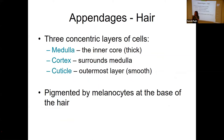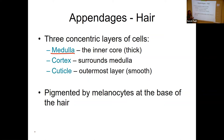Your hair, when looked at under a microscope, has three concentric layers. It has a medulla — I always remember medulla means middle, the innermost core of your hair. Around that is the cortex. And then wrapped around the very outside is the cuticle.